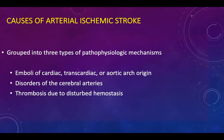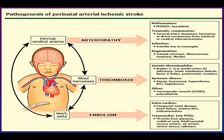The causes of arterial ischemic stroke can be grouped into three types: emboli of cardiac, transcardiac, or aortic origin; disorders of cerebral arteries; and thrombosis due to disturbed hemostasis. The pathogenesis involves three main groups: arteriopathy, thrombosis, and embolism. In the arteriopathy group, important causes include certain malformations such as atresias and hypoplasia, traumatic compression including cervical artery dissection, herniation, or direct compression from subdural or cerebral edema, and infection including arthritis due to meningitis.